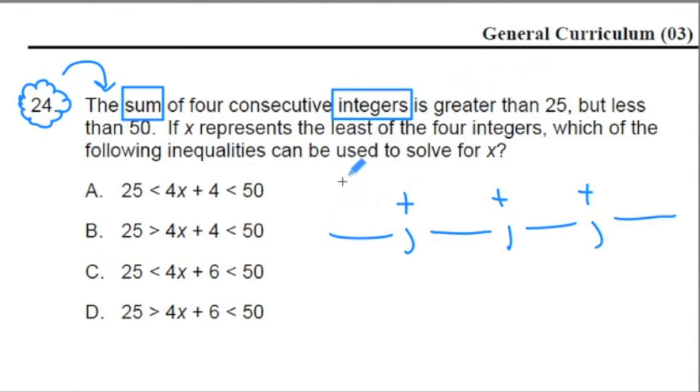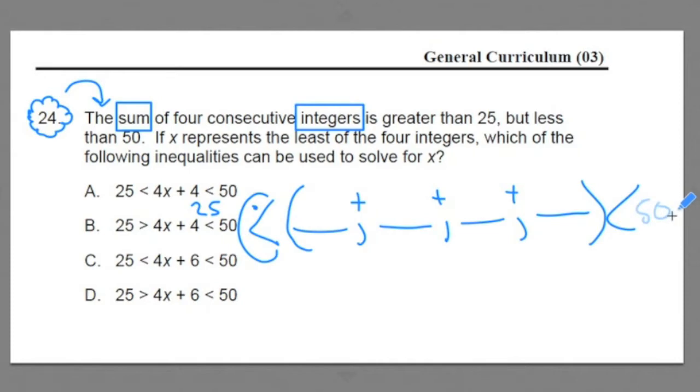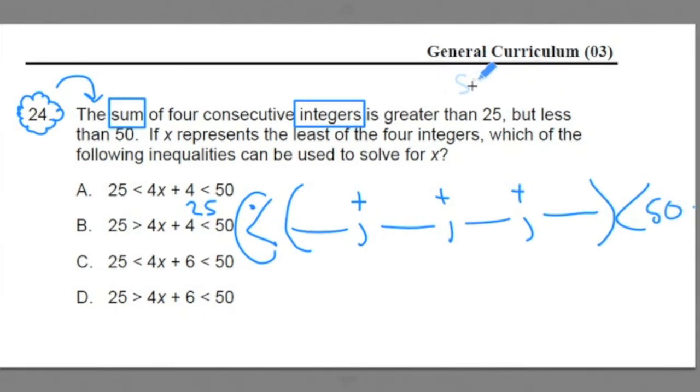Then it says it's greater than. When we add these four numbers up, it's going to have this inequality symbol, that Pac-Man symbol. The sum of those numbers is greater than 25 but less than 50. If it had said greater than or equal to 25, we would have had that inequality. But it didn't. Just the greater than or less than.